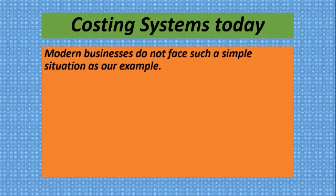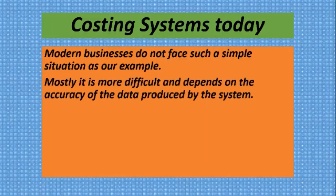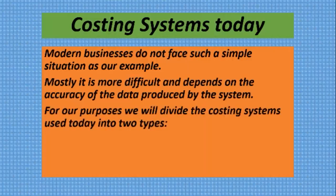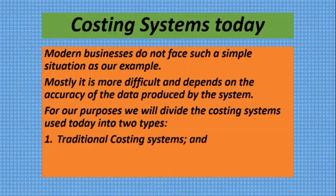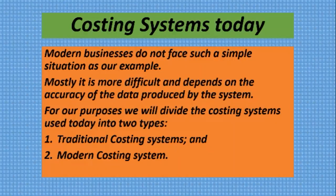Modern businesses do not face such a simple situation as our example — it is mostly more difficult and depends on the accuracy of the data produced by the system. For our purposes, we will divide the costing systems used today into two types: traditional costing systems and modern costing systems. These two divisions will be the focus for our key exams; in practice there are many more systems, and people are still devising systems tailor-made to their situation.